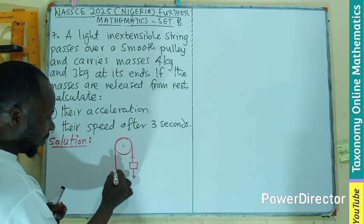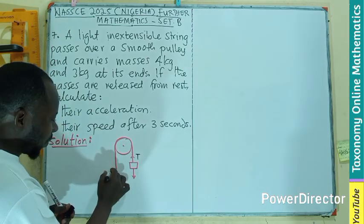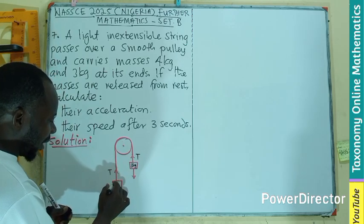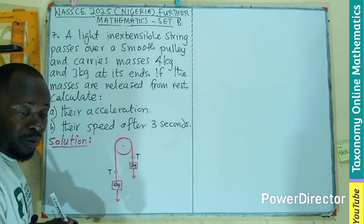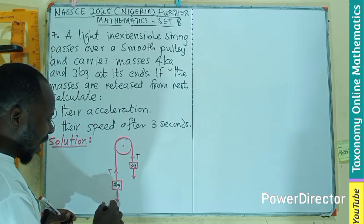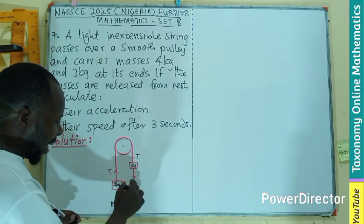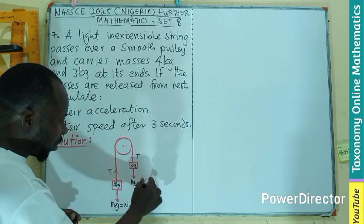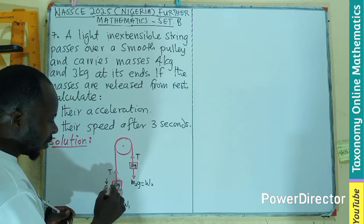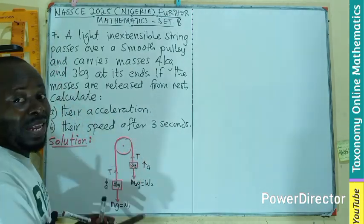Since the bigger mass moves downward, there will be tension in the string pulling each weight upward. There is a tension here pulling the weight upward, and tension here also pulling the weight upward. This is our 3 kg mass and this is our 4 kg mass, because the 4 kg will move downward. The weight w2 equals m2g, and the acceleration here is moving downward while the acceleration on the other side moves upward.